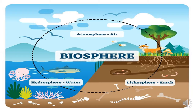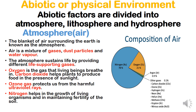Understood. Abiotic natural environment has three parts: atmosphere, hydrosphere, and lithosphere. These three help the biotic environment — they are interdependent. Atmosphere means air, lithosphere means land, hydrosphere means water. These three help support life and help form the natural environment.